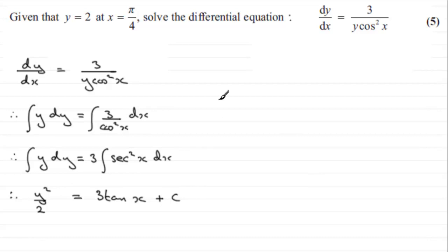We need to work out what this constant is. I'm going to carry on down here and call this equation 1. What we know is that we have this condition: we're given that y equals 2 at x equals π/4. So when x equals π/4, y equals 2, and we can substitute them into this equation.